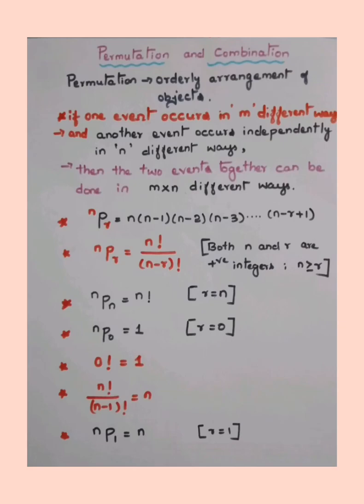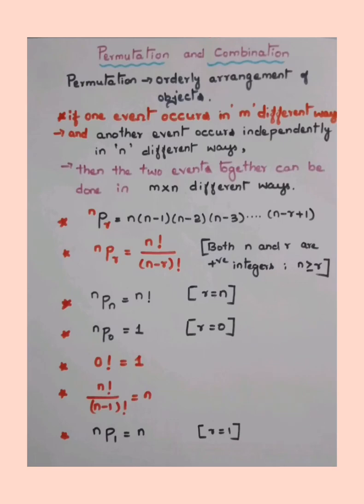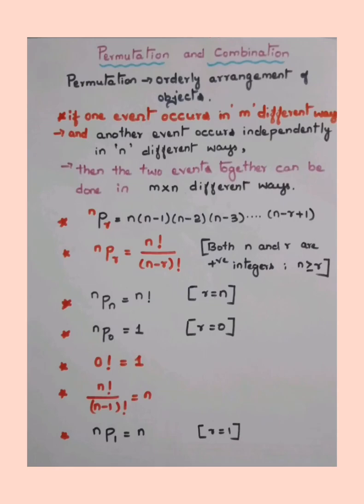If one event occurs in m different ways and another event occurs independently in n different ways, then the two events together can be done in m × n different ways. This is the fundamental counting principle.